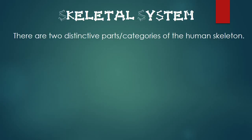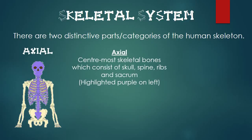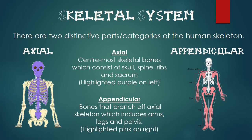There are two distinct categories of the human skeleton. The axial skeleton, which is the centre-most skeletal bones consisting of the skull, spine, ribs and sacrum. And also the appendicular skeleton, which are bones that are branched off from the axial skeleton, which includes the arms, legs and pelvis.